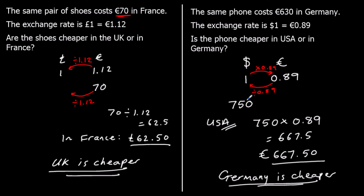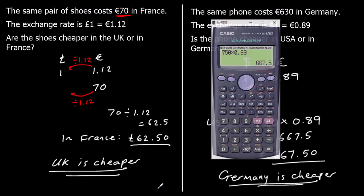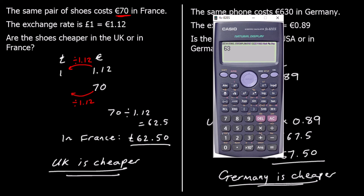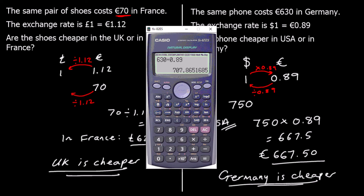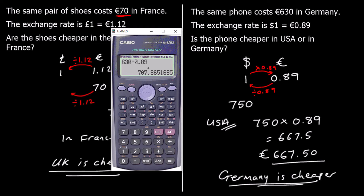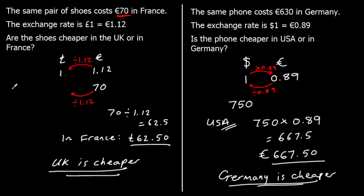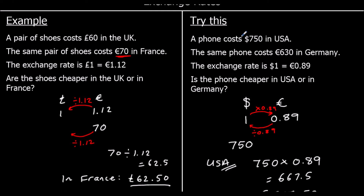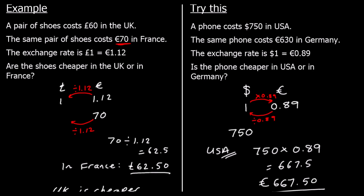The other way of working it out would have been to change 630 euros into dollars, which would be divide by 0.89. So 630 divided by 0.89 means in Germany the phone costs 707 dollars and 87 cents. 707 dollars is less than 750 dollars, so it's cheaper in Germany.